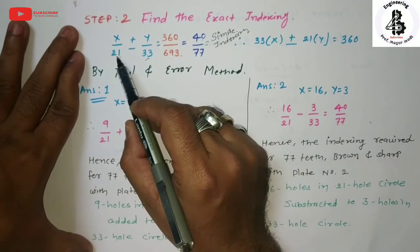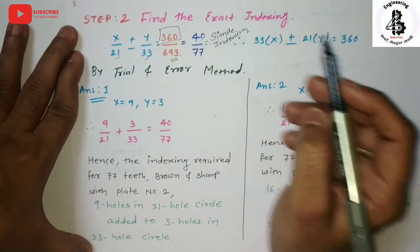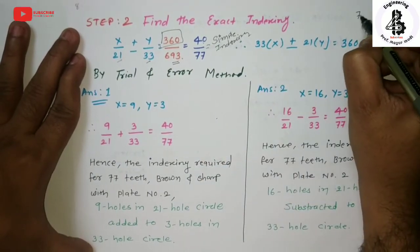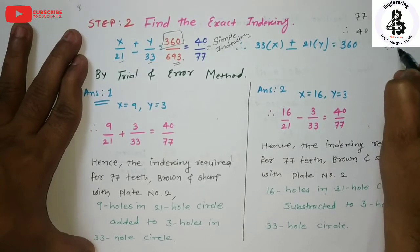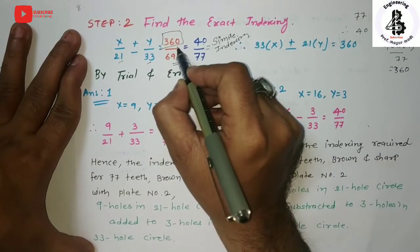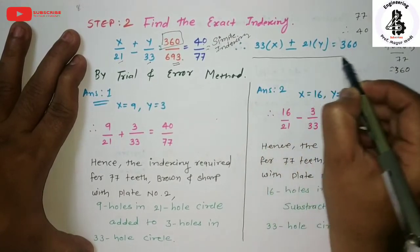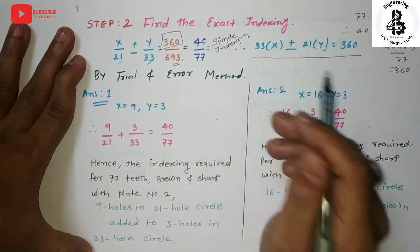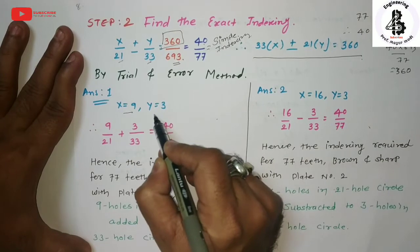Taking the LCM of 21 and 33 gives 693. So for 77 index divisions, 693 is the LCM. To find the numerator: 40 × 693 / 77 = 360. Substituting 360, the equation becomes: 33x ± 21y = 360. Solving this by trial and error method, there will be multiple answers available. By trial and error, you get x = 9 and y = 3 for the positive sign of this equation.